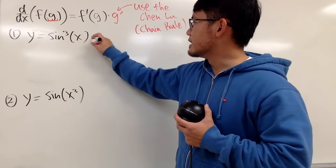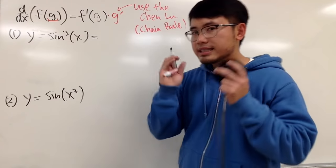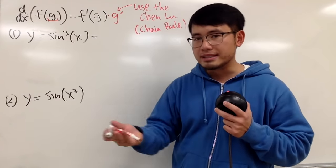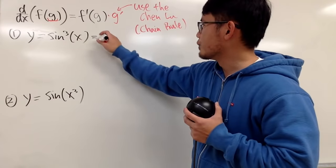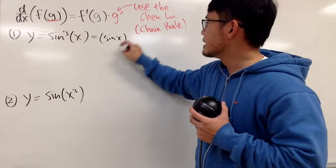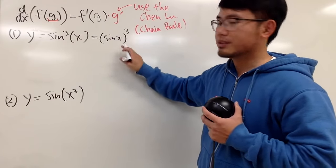This right here, in fact, it's saying you take sin x and you multiply by itself three times. So I will write it down right here for you guys. We have sin x inside, and then raise that to the third power. That's what this notation means.